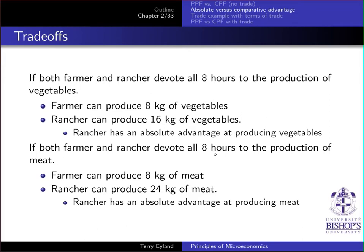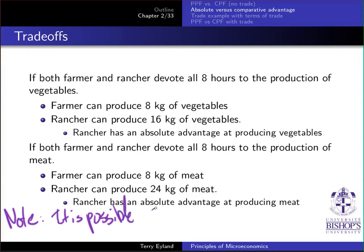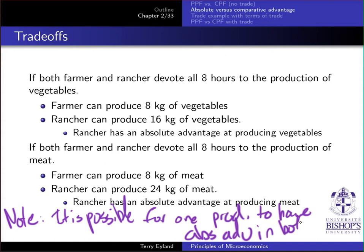On the other hand, if both devote all 8 hours to meat production, the farmer produces 8 kg and the rancher produces 24 kg, so the rancher has absolute advantage in meat as well. It is possible for one producer to have absolute advantage in both goods — it doesn't have to be split between producers. One country can simply be more efficient than another in producing greater quantities of multiple goods.